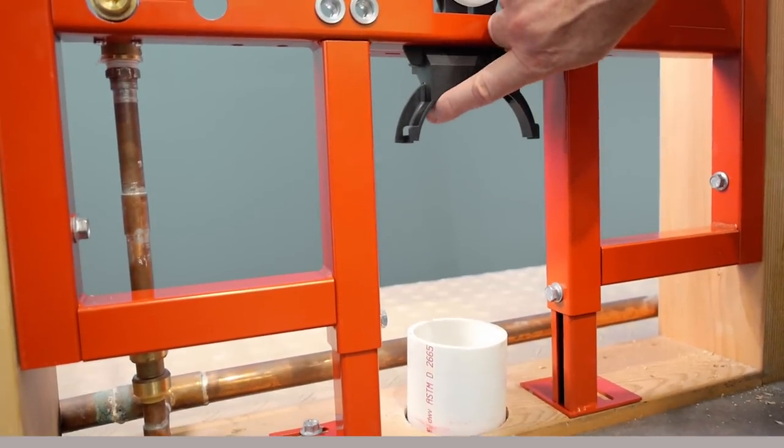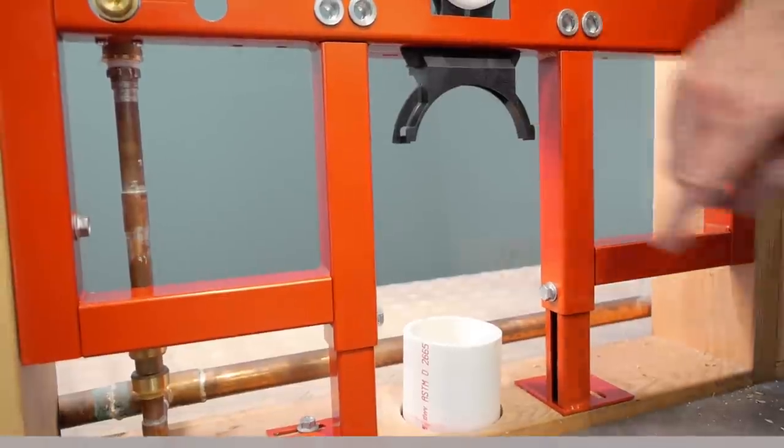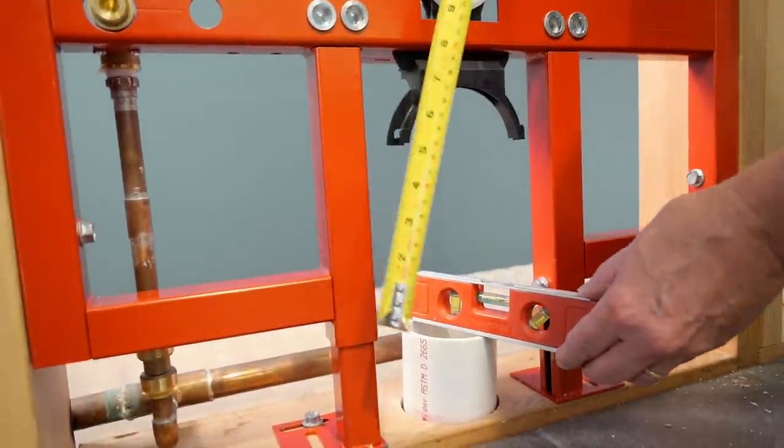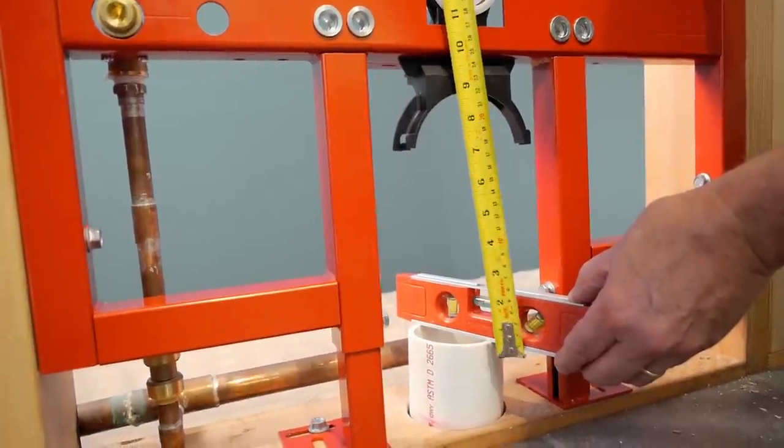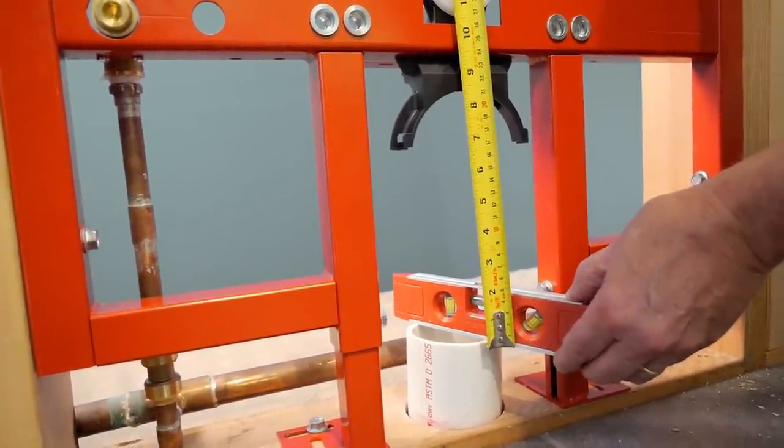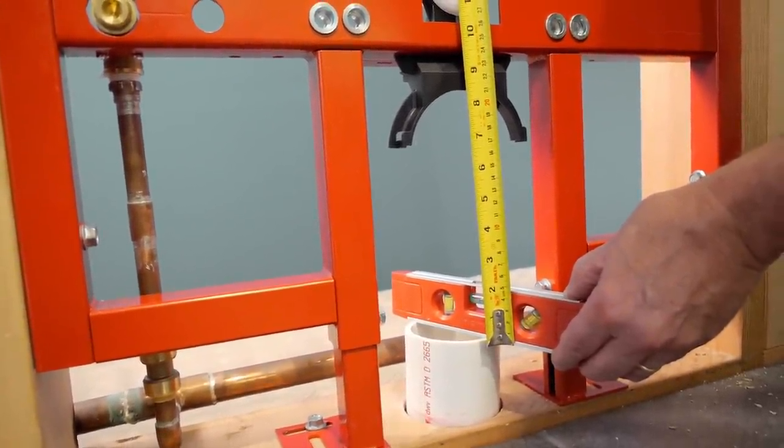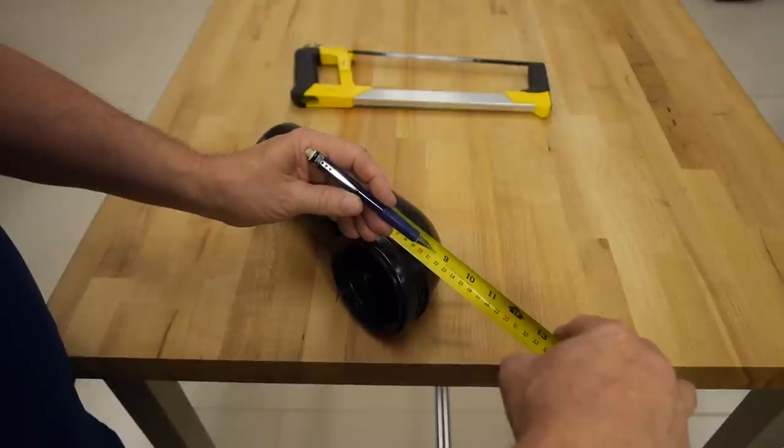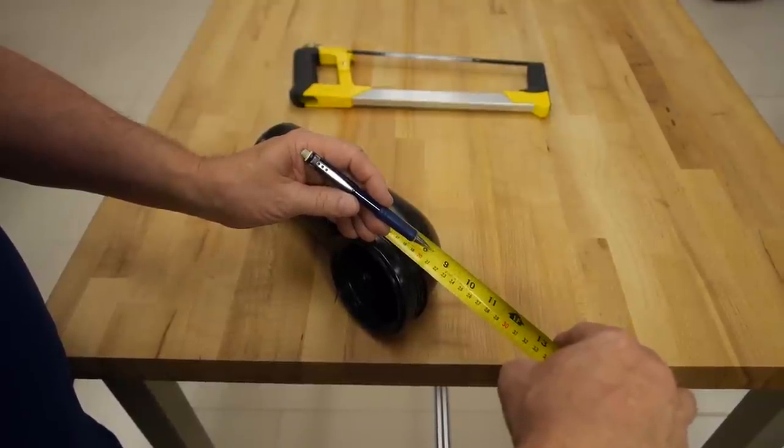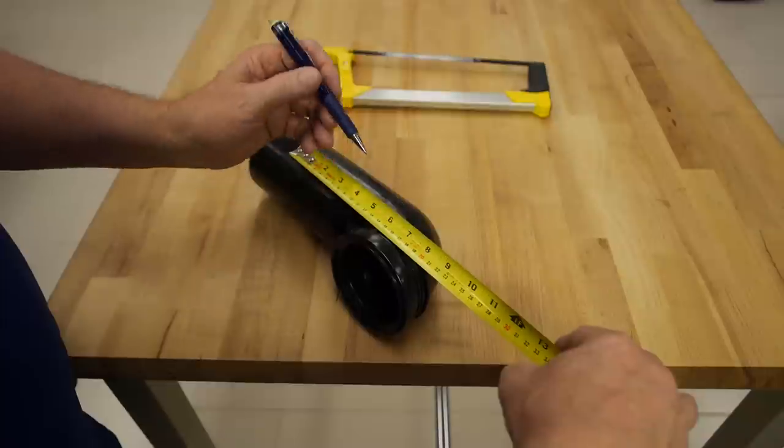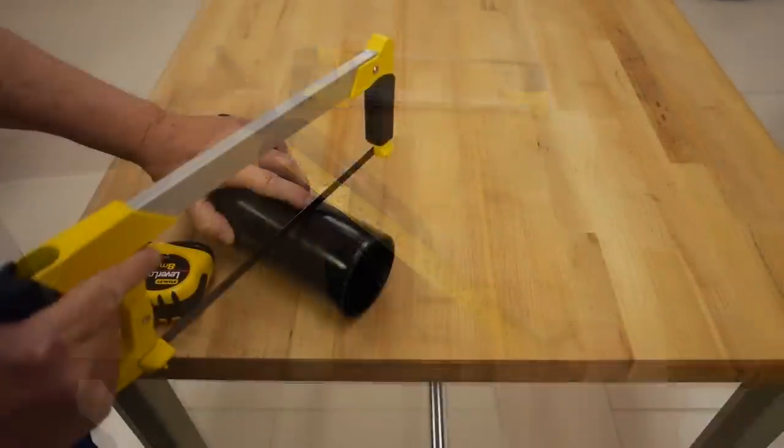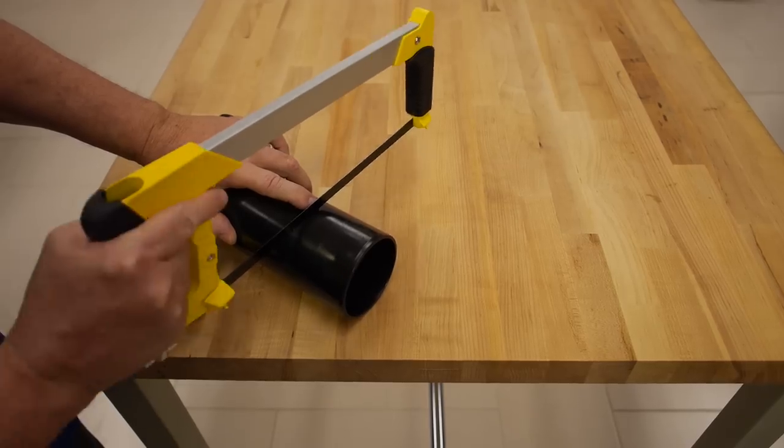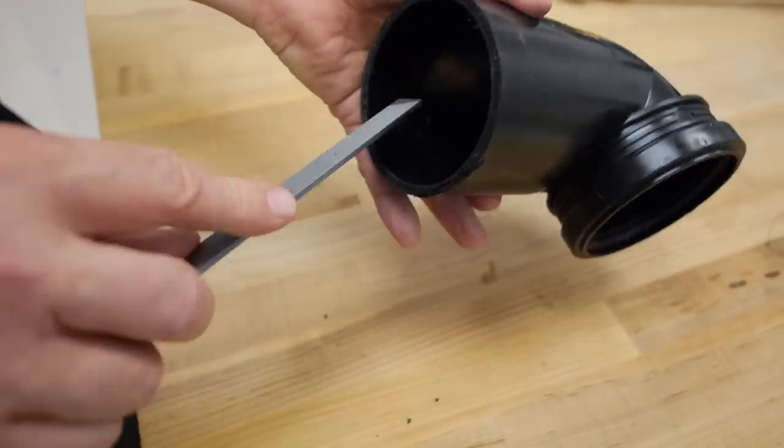Now you can determine the length to cut the drain elbow. Measure the distance between the top bracket that comes attached to the carrier and the top of the stub end of the floor drain. Use this distance and subtract a quarter inch to mark the cut. Make the cut as square as possible, and then use a file to deburr the rough edge.